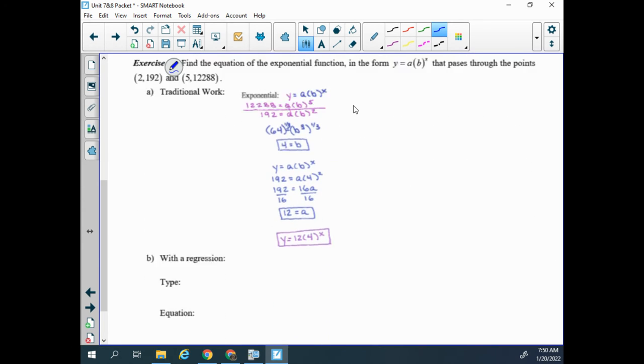So looking at the second one, this is our exponential function where we're given two points. So same deal. Here's my algebraic work, solving with a system. I'm going to make a table to find my regression. This will be exponential for the type.